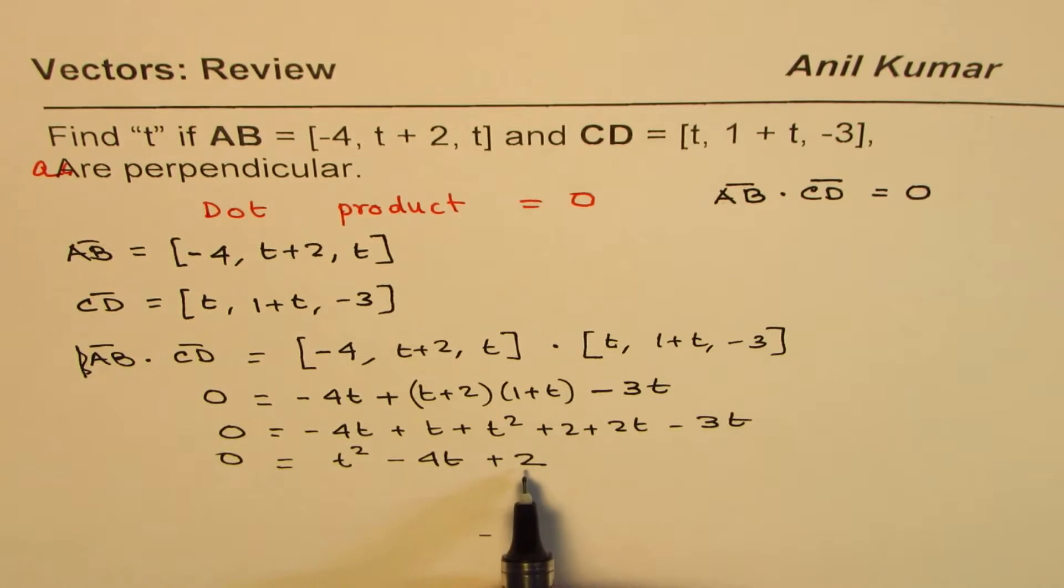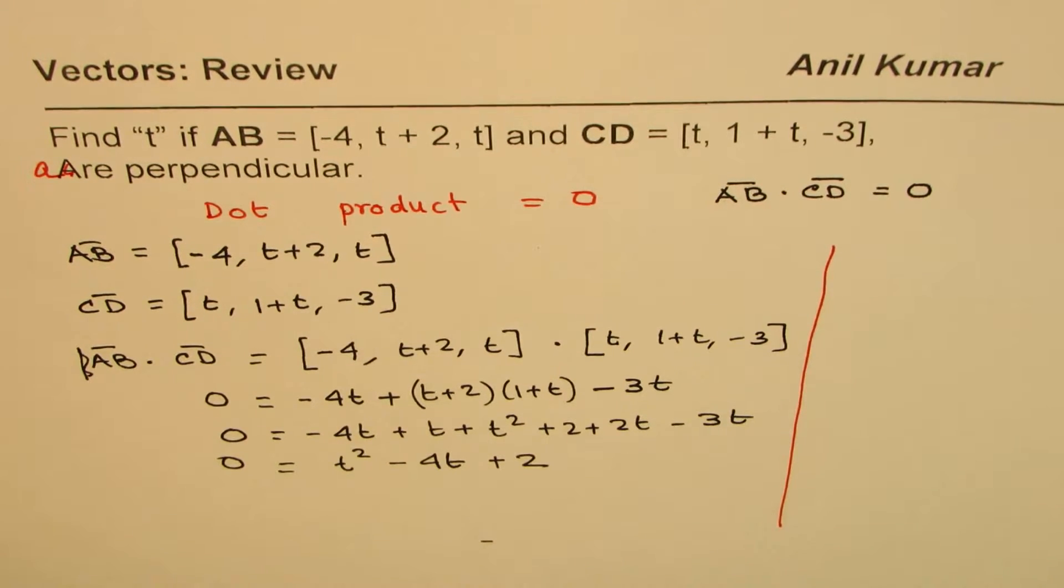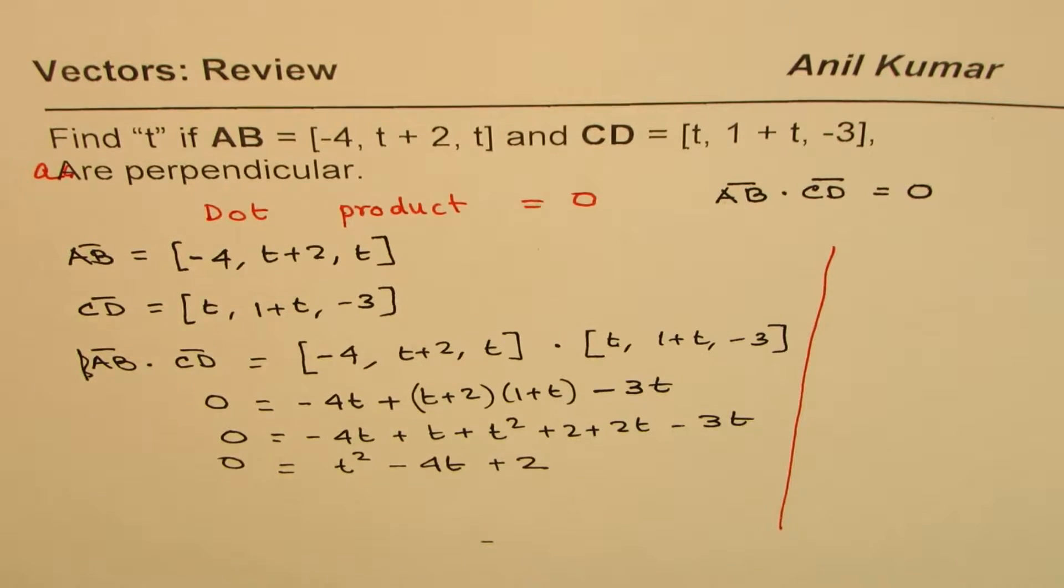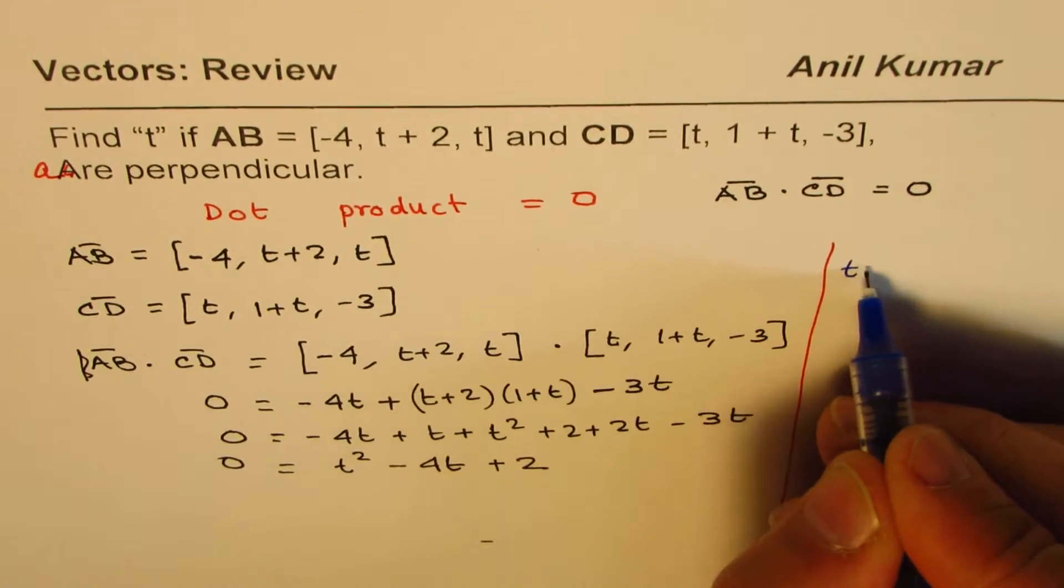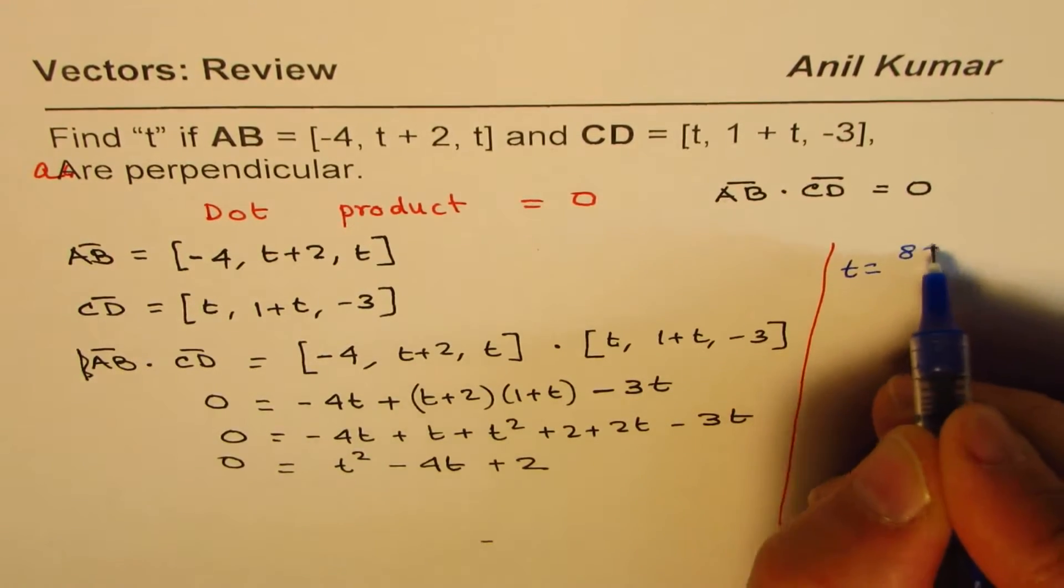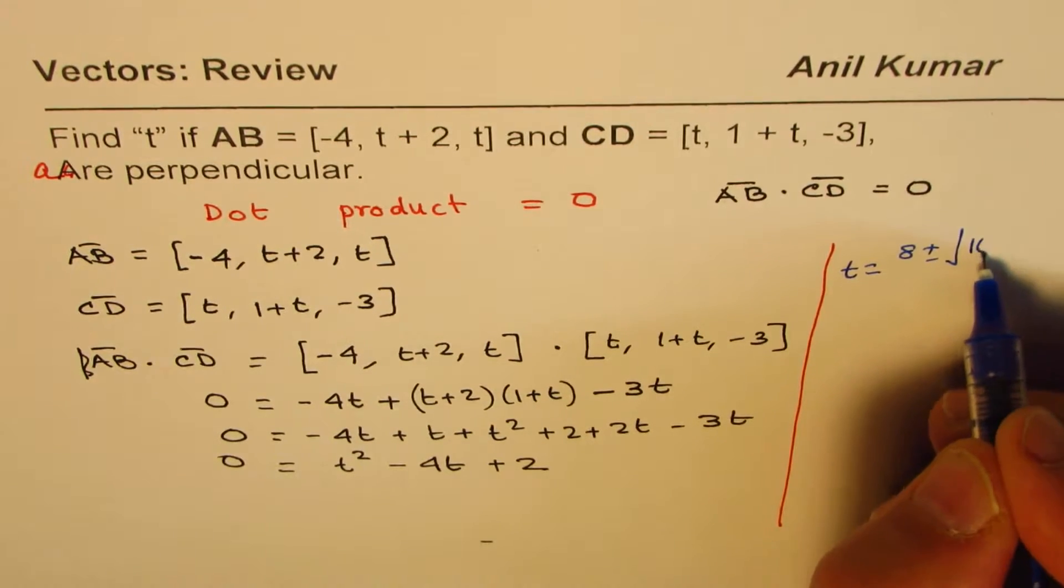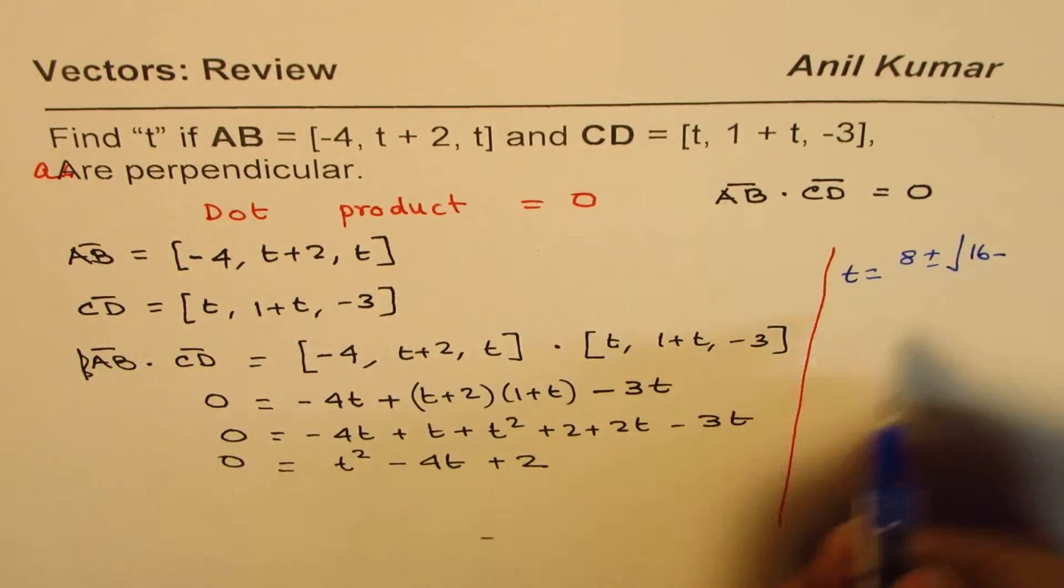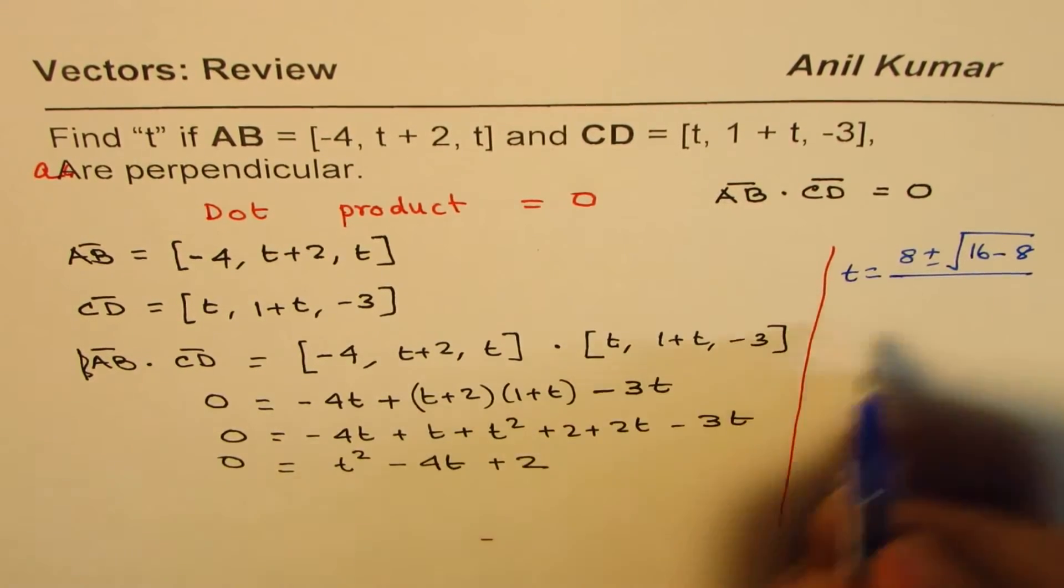Let's use the quadratic equation to solve this. So, I will do it on the side. So, t will be equals to minus b which is 4 plus minus square root of b square which is 16 minus 4ac, that means 4 times 8, square root divided by 2.